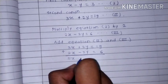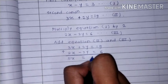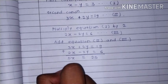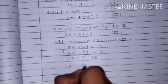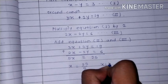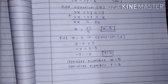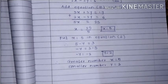Adding gives 5x equal to 25, so x is equal to 5. Put x equal to 5 in equation 1: 5 minus y is equal to 3, so minus y is equal to minus 2, therefore y is equal to 2. The greater number x is equal to 5 and smaller number y is equal to 2.